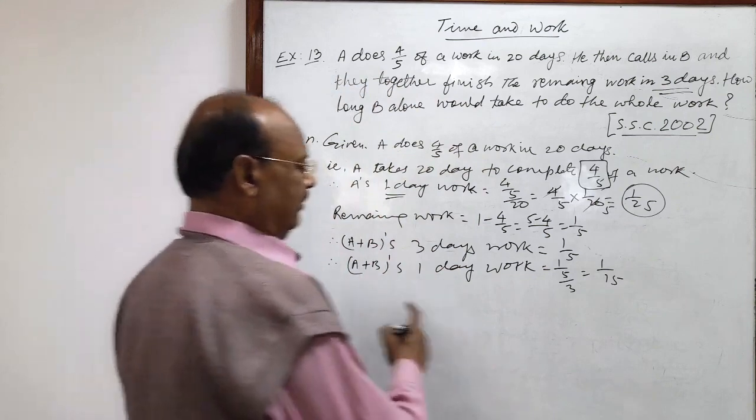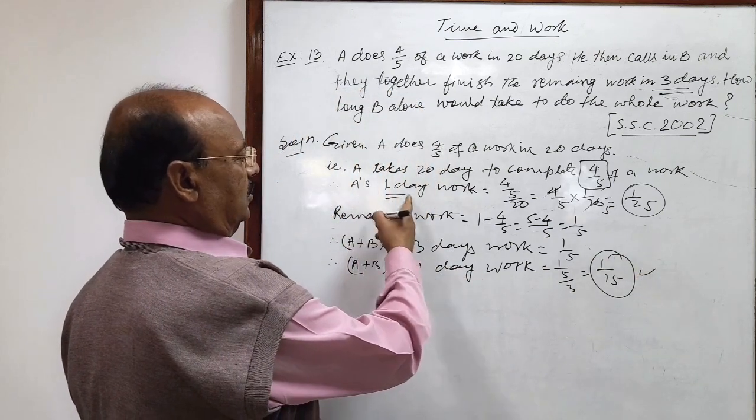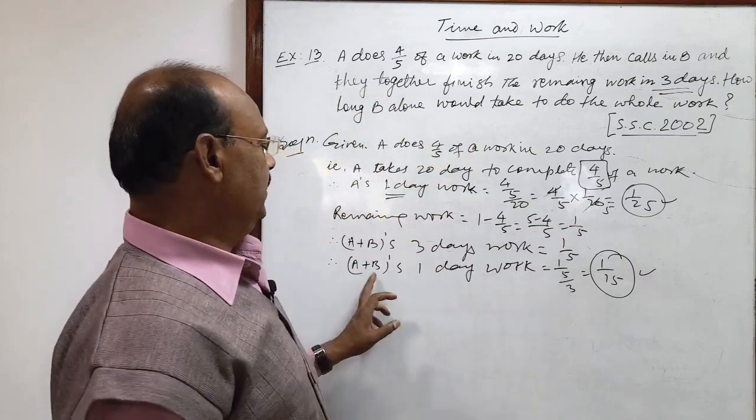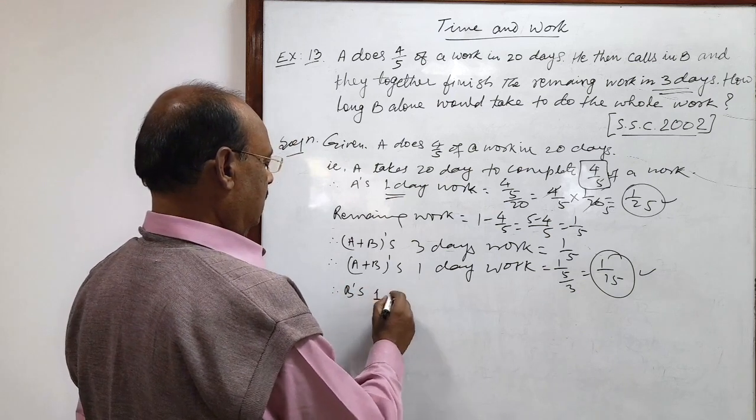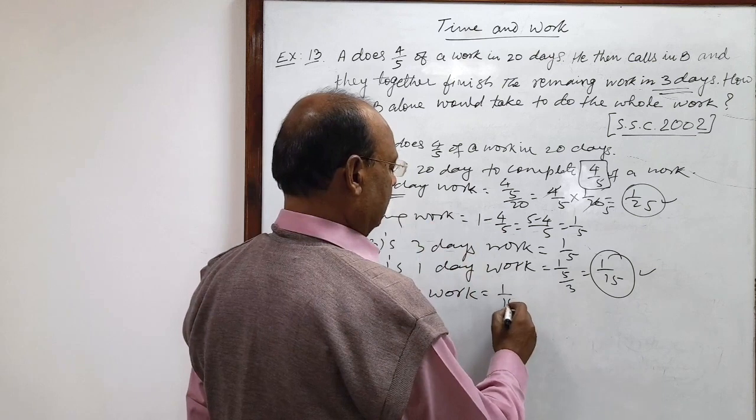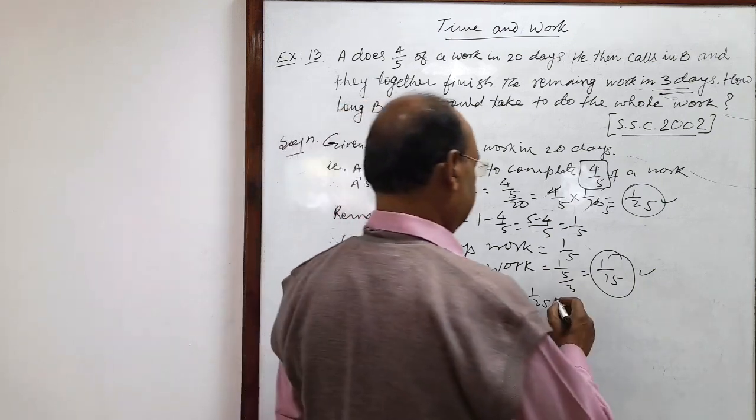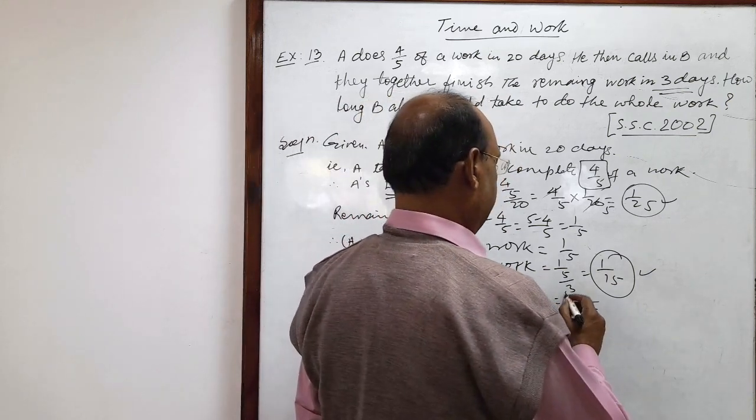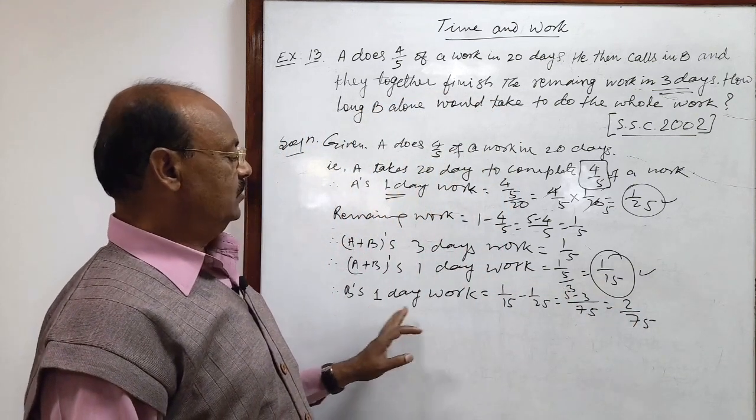So you see we are having the value of A plus B's work here. Also, we are having the value of 1 day work done by A. So difference of these two will give us B's one day work. Therefore, B's one day work is equal to 1 by 15 minus 1 by 25. Correct? Let us simplify it. LCM will be 75 and here 5 minus 3. This is equal to 2 by 75. This is B's one day work.